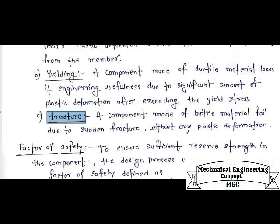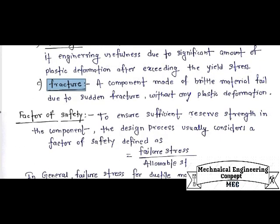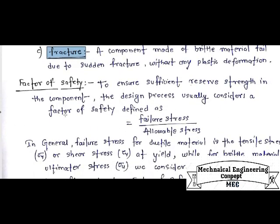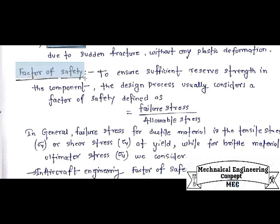These are the three basic types of modes of failure. The next major important topic is the factor of safety. Factor of safety can be defined as the ratio of failure stress to working or allowable stress. It is the ratio of the maximum stress at which a component can fail to the allowable stress at which it safely operates.